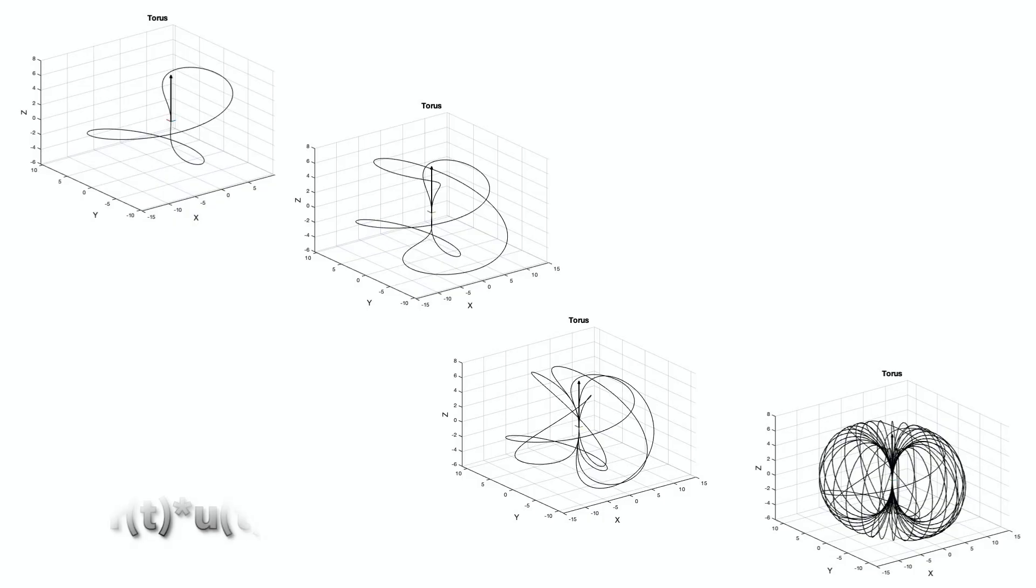The generating function R, which depends on time, together with the unity vector, creates a closed loop. At the end of many loops, a spatial torus is created in this way. And this torus oscillates.